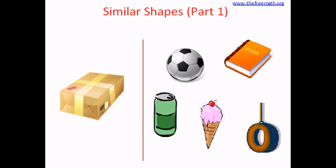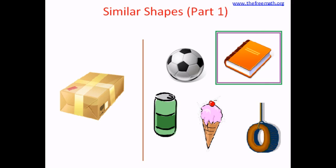Does this box look like this ball? No. Does it look like an ice cream? No. Does it look like a book? Yes. The box and the book have similar shapes. Their colors are different, but the shapes are similar.